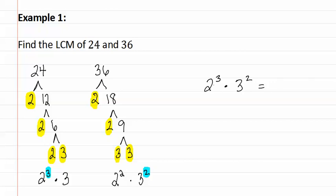We therefore write two to the third times three to the second. We picked two to the third because that was more than two to the second, and three to the second because that was more than just a three. Now we must multiply these together. Two to the third is two times two times two, which is eight. Three squared is three times three, which is nine. Eight times nine is seventy-two, so our least common multiple is seventy-two.